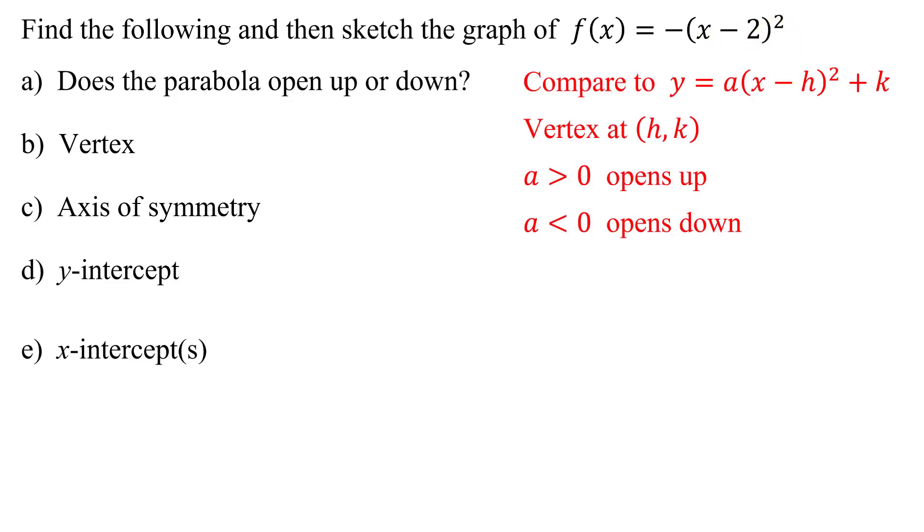So quickly reviewing, I need to compare it to y equals a times the quantity x minus h all squared plus k. When I graph this function, I'm going to get a parabola. It'll have a vertex at the ordered pair (h,k). If a is positive, it will open up and if a is negative, it will open down.